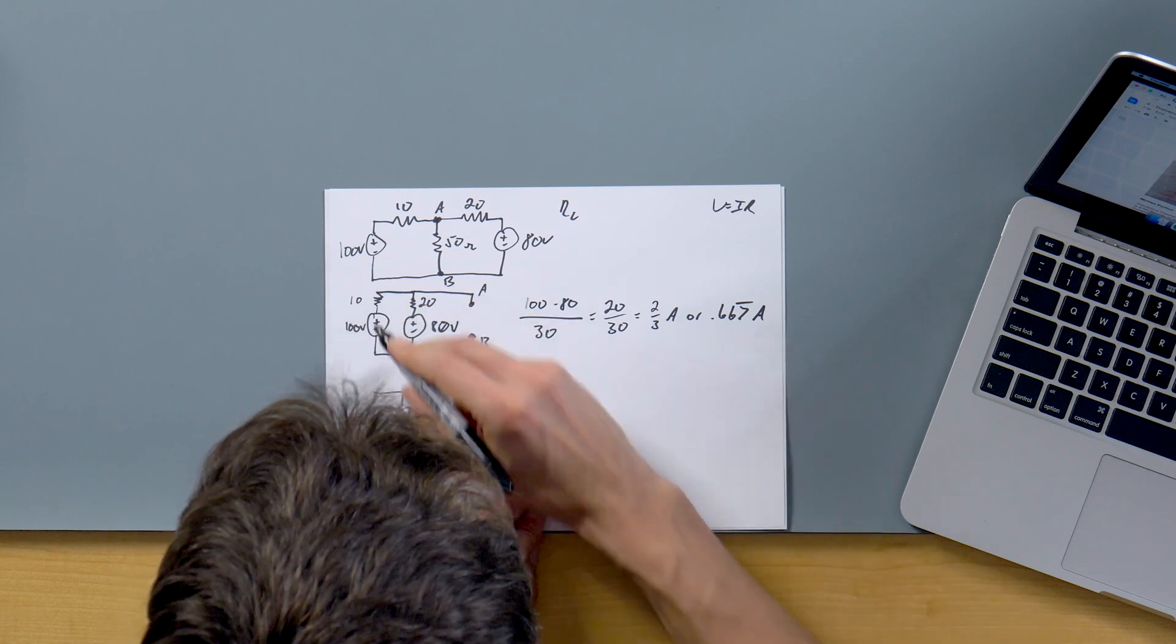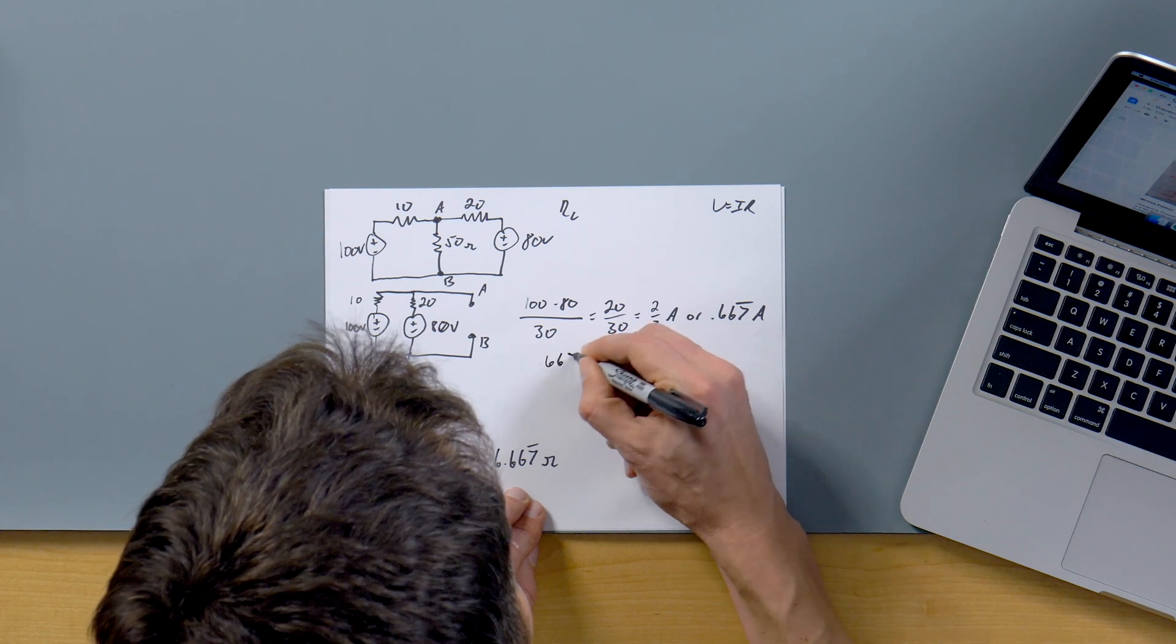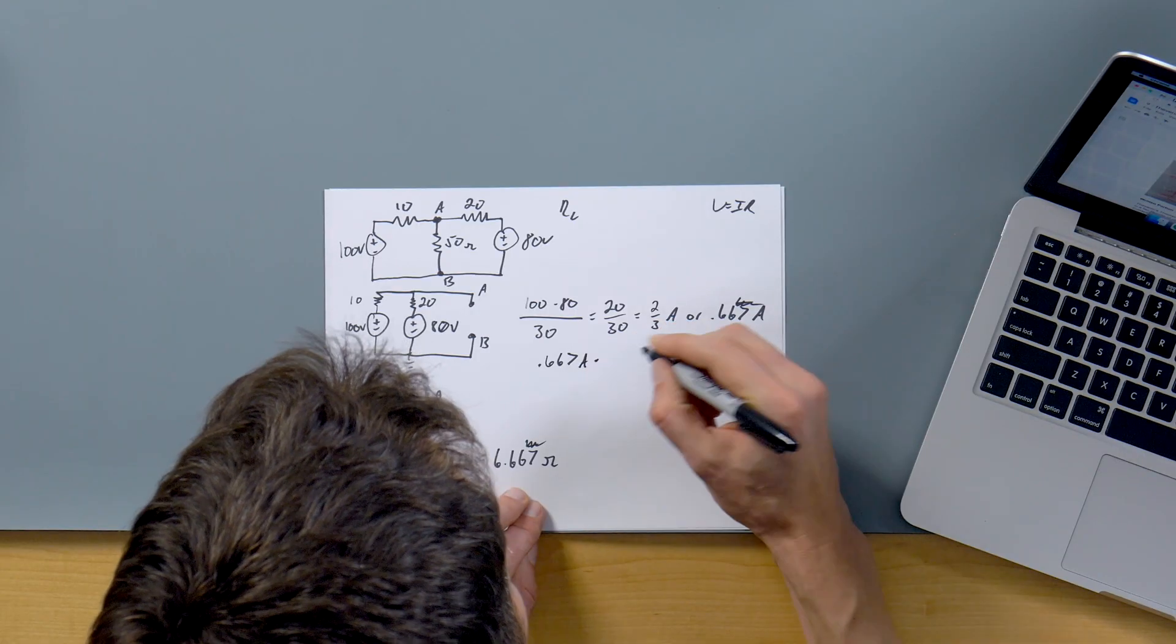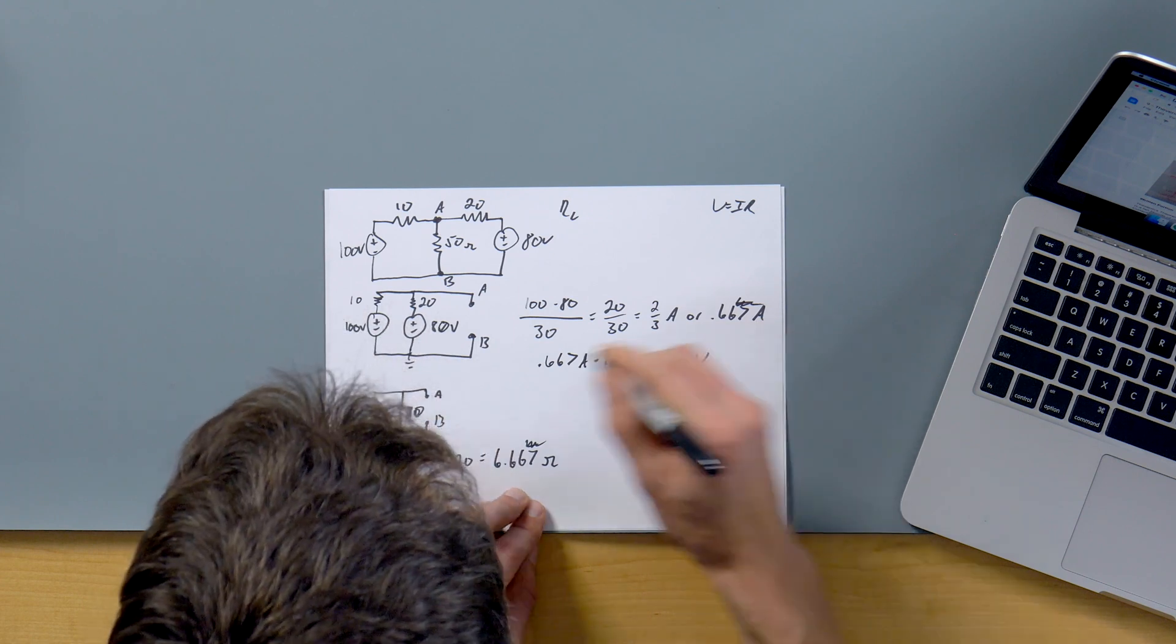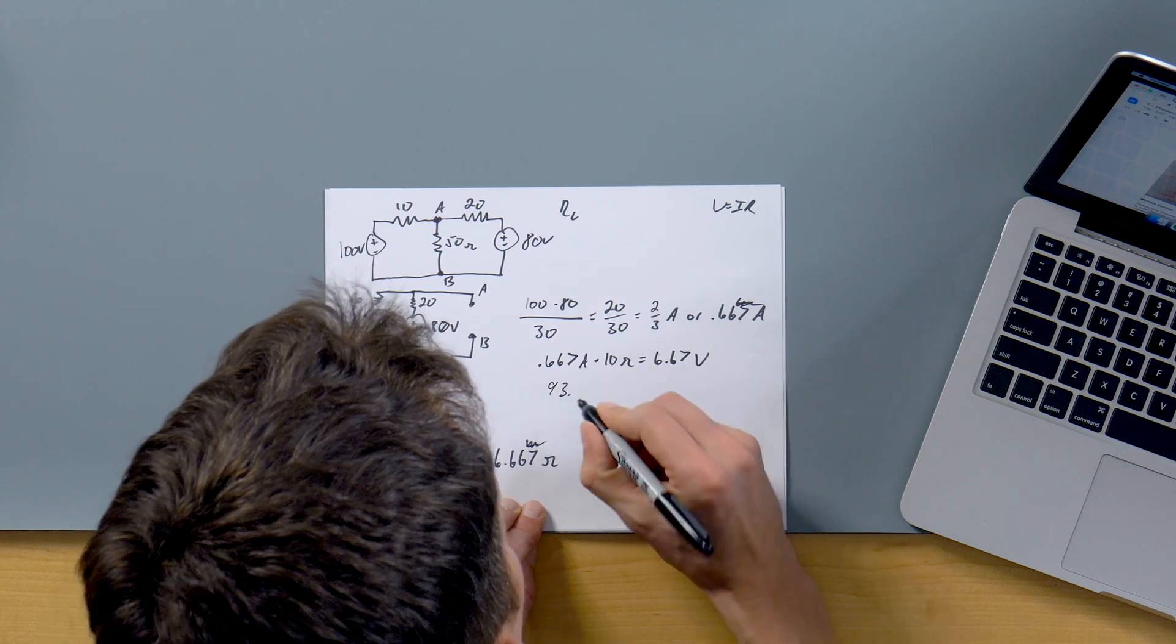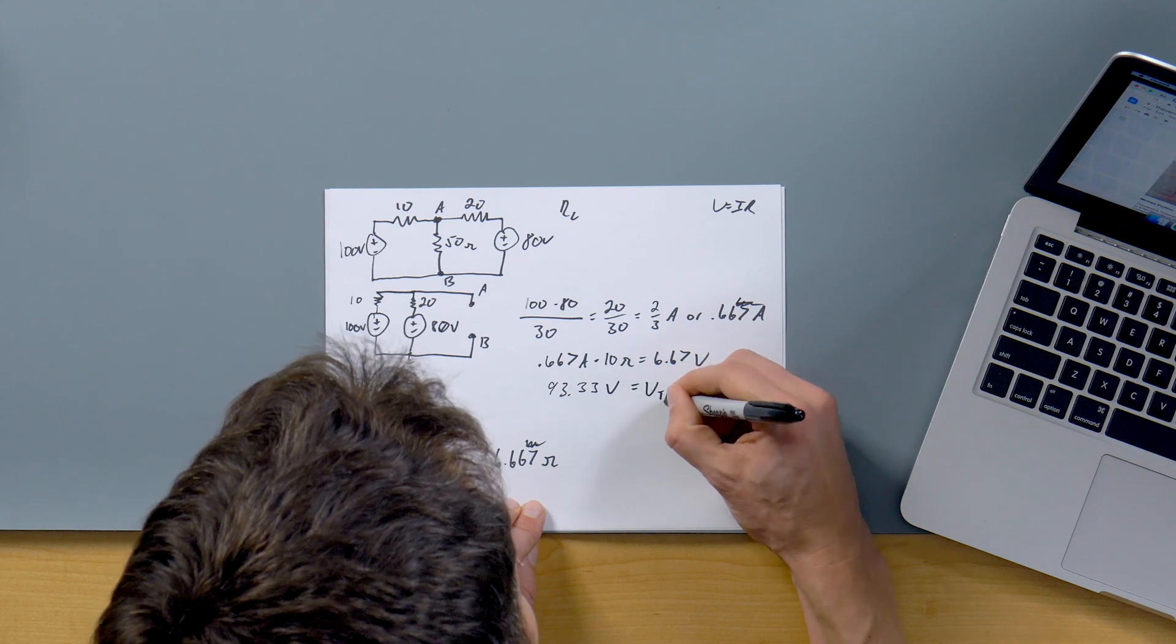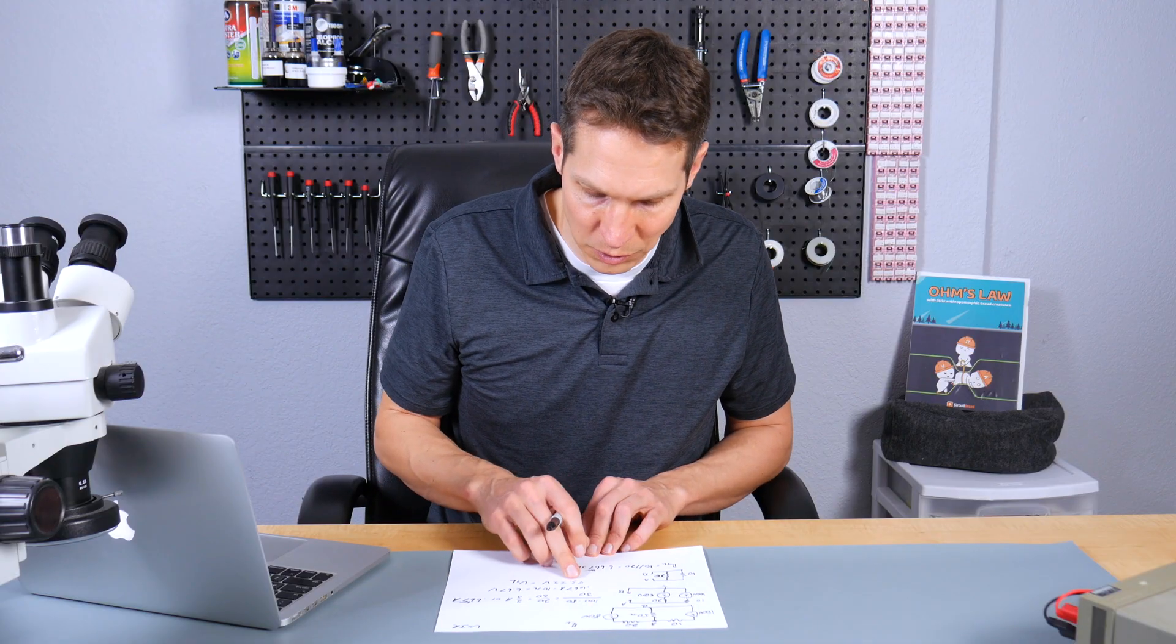All right, and since we now know the current through that 10 ohm resistor, we can find the voltage drop by just basically saying 0.667 amps times 10 ohms equals 6.67 volts. So now we know that this point right here is going to be 93.33 volts, which is going to be our Thevenin voltage. Excellent. So now we know our Thevenin voltage and our Thevenin resistance.